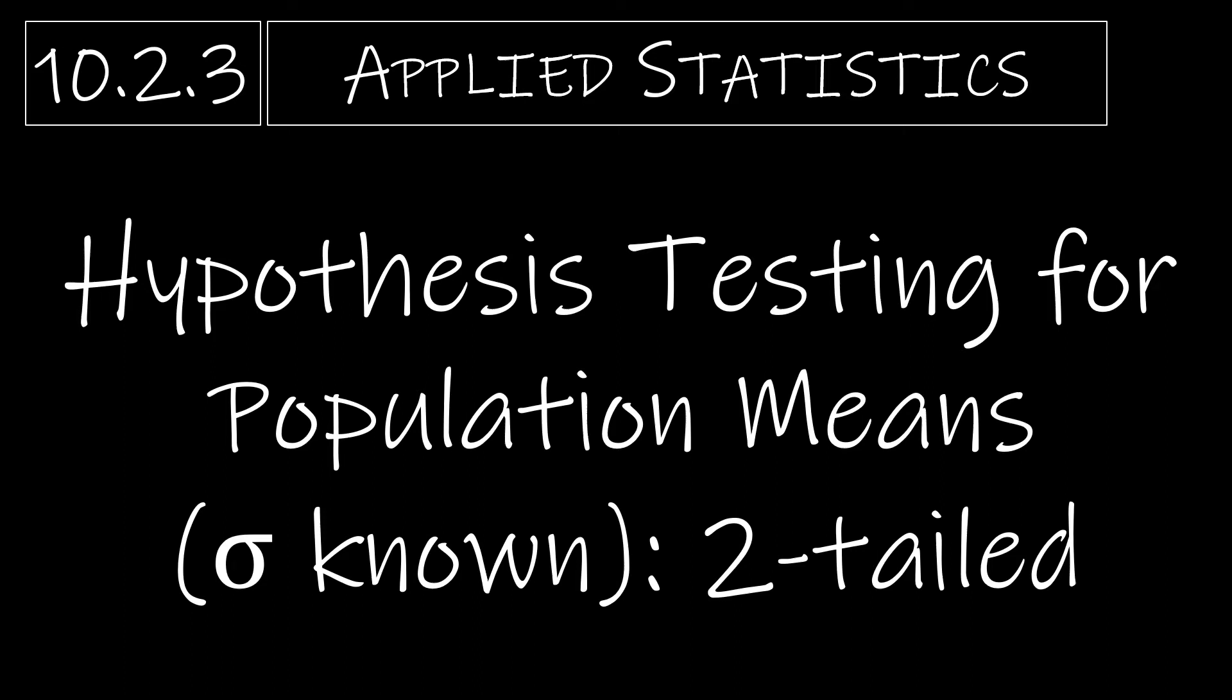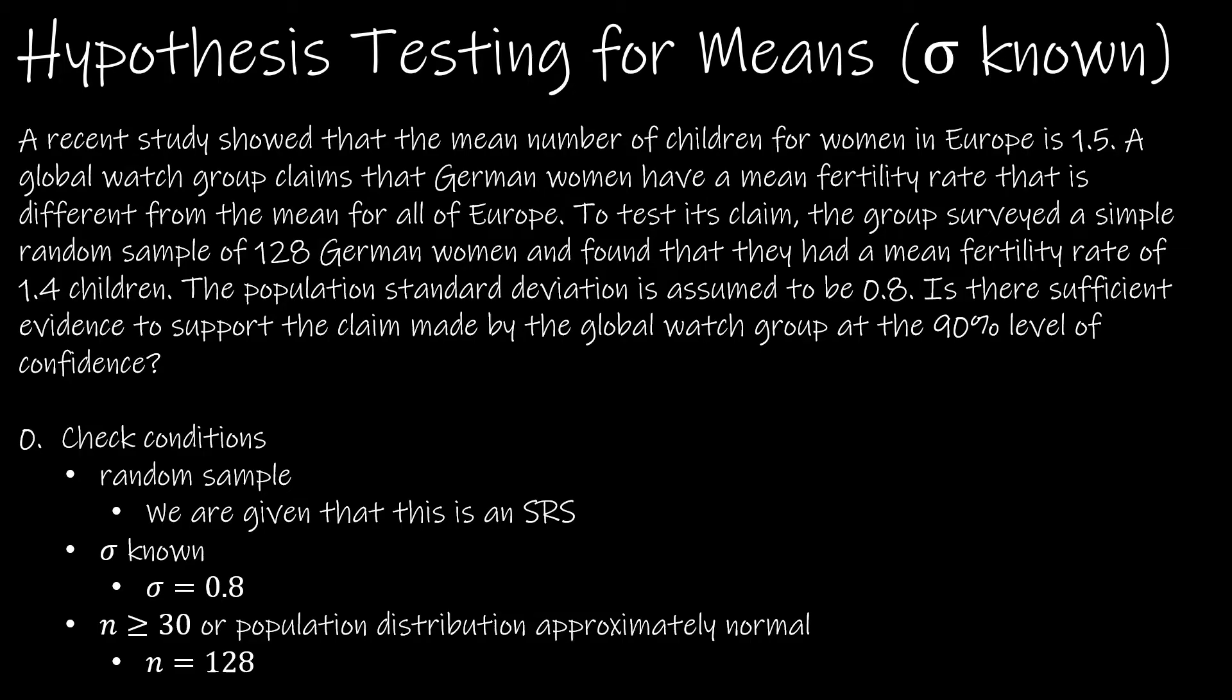Let's take a look now at hypothesis testing for means where sigma is known for a two-tailed alternative hypothesis. The steps for this hypothesis test are exactly the same as a one-tailed test, so notice I did not include that extra slide that had all of the steps. It's the same for all of these examples.